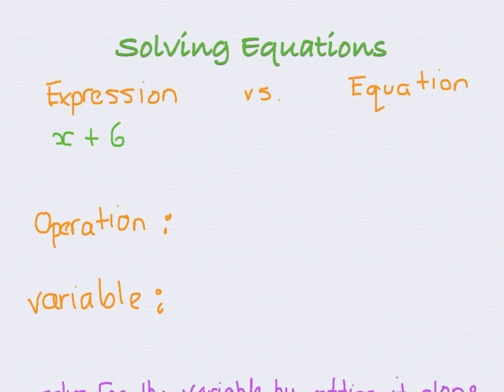First is an equation. The difference between an expression and an equation is that an equation uses an equal sign. Because an equation means that we are going to solve for whatever our x actually is. So x is just some kind of unknown number when we talk about algebra.